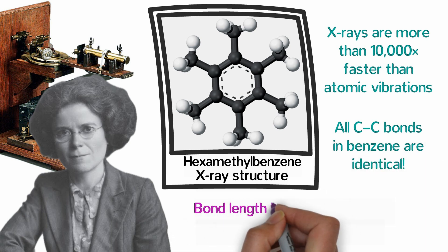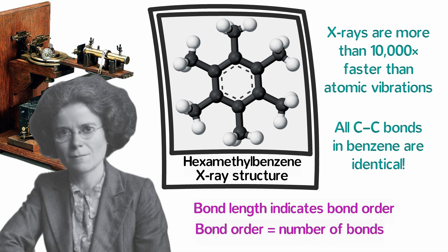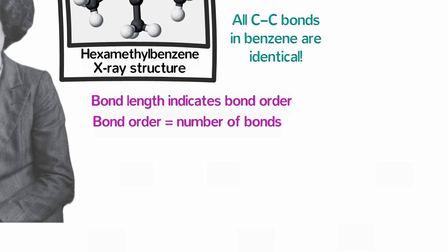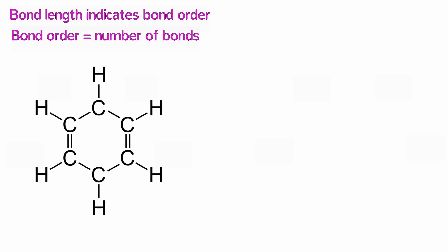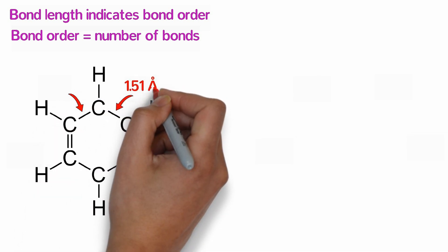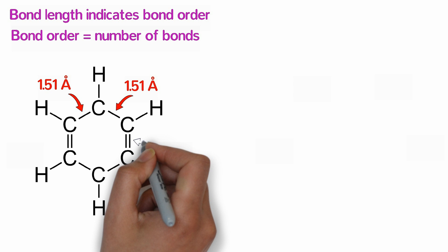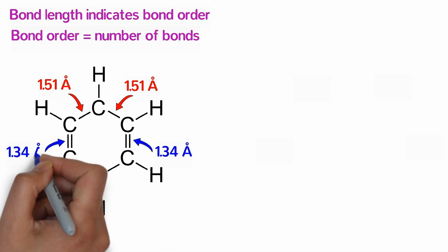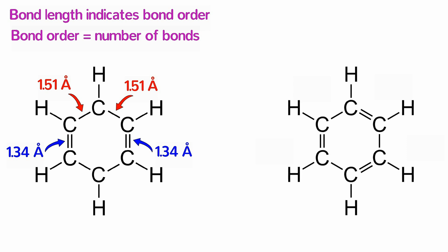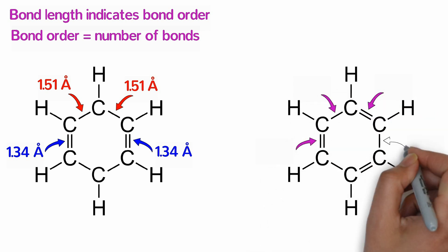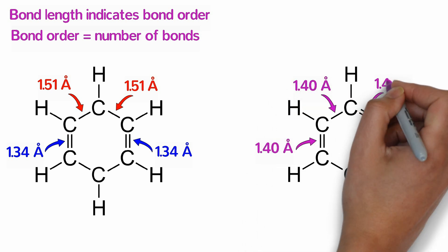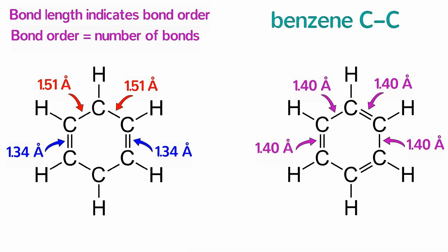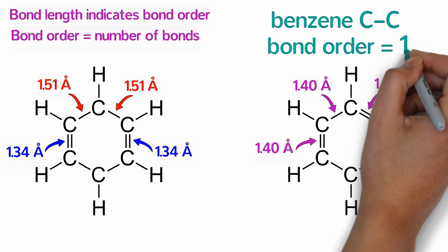Keep in mind that bond lengths are indicative of bond order. Bond order is a term that means the number of bonds between two atoms. In 1,4-cyclohexadiene, for example, the single bonds have a bond length of 1.51 angstroms and the double bonds have a bond length of 1.34 angstroms. Double bonds are significantly shorter than single bonds. In benzene, however, all the carbon-carbon bond lengths are 1.40 angstroms, in between the length of single and double bonds. That is consistent with a bond order of 1.5.